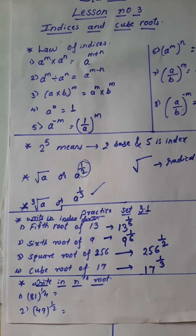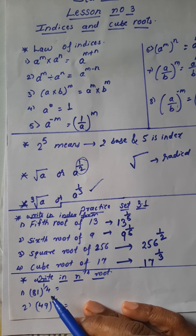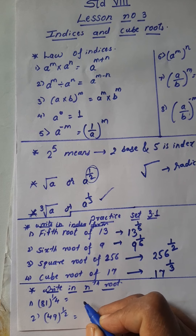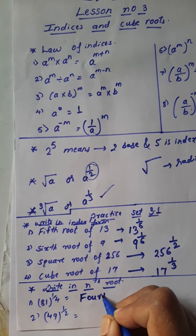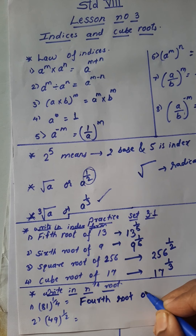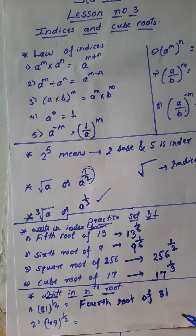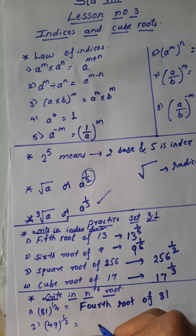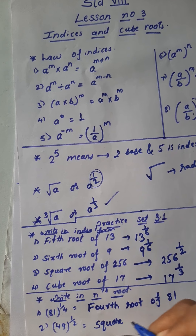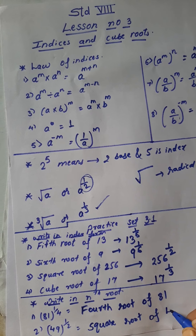Next, write in the nth root form. Question: it is given as 81 raised to 1 upon 4. We write 4th root of 81 — the inner number is 81. Next, 49 raised to 1 upon 2 — 1 upon 2 means square root, so we write the square root of 49.